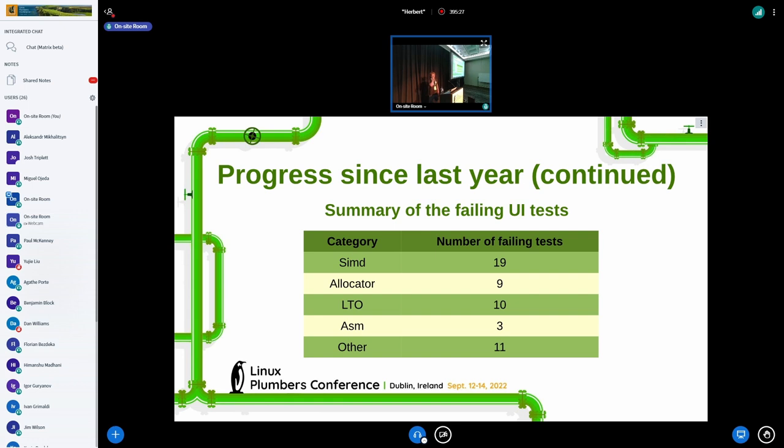So, of those failing tests, most of them are related to SIMD. We got a few assert failures in the tests that are using the allocator. There's a bunch of LTO tests that are failing as well because we don't support LTO yet. And there's a few inline assembly tests that fail. And there's a bunch of other where we either segfault or have assertion failures.